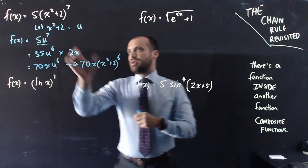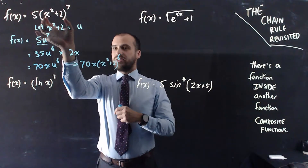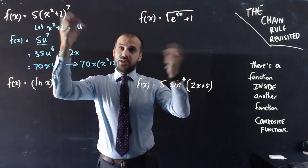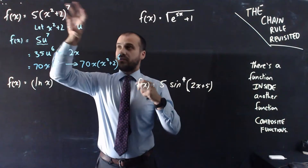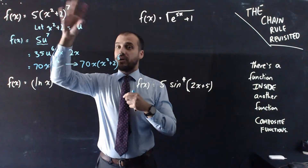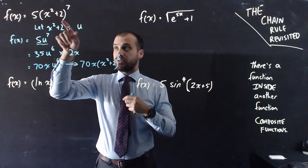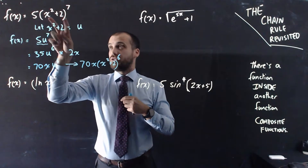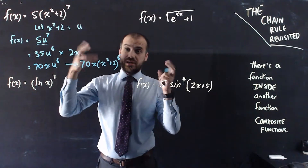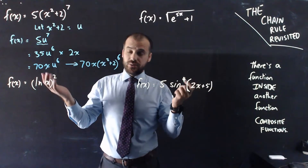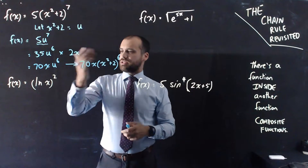So what have I done? I've pretended that the inner expression is just u — I've derived 5u to the 7, and then I've multiplied it by the derivative of whatever it was that I was pretending was u. Now let's take a look at the next one: ln(x) squared.